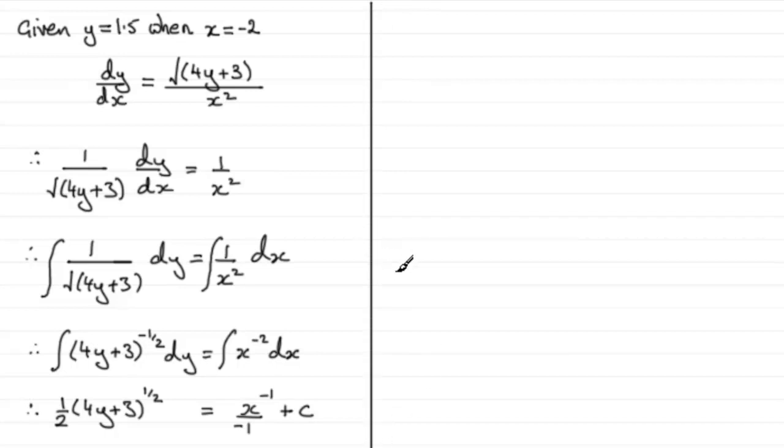So if we come down here now and we need to tidy this up and work out what this constant c is going to be. If we tidy it up first of all, we're going to get half of 4y plus 3 to the power a half equals minus 1 over x plus that constant c.